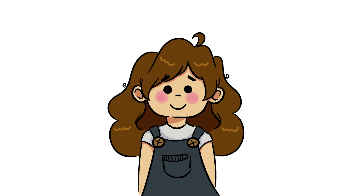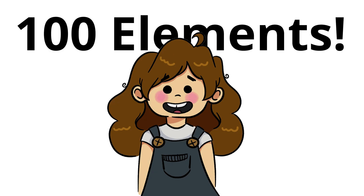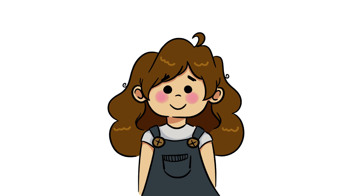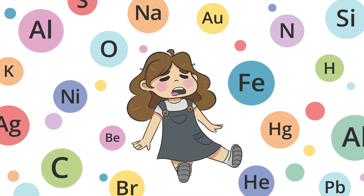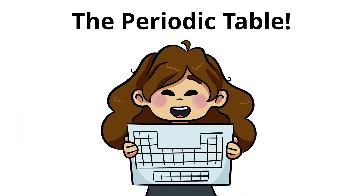Throughout human history, we've either discovered or created over 100 elements. The first 18 are especially important to keep note of as they are the most prevalent in our universe. But the sheer amount of elements begs an important question: how do we keep track of all these elements? We can categorize elements in countless different ways, including name, symbol, atomic number, atomic mass, boiling point, and melting point. However, scientists needed to find the best and most efficient method of categorization. Eventually, a method came about known as the periodic table, which organized elements by chemical properties.